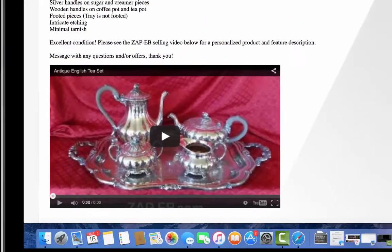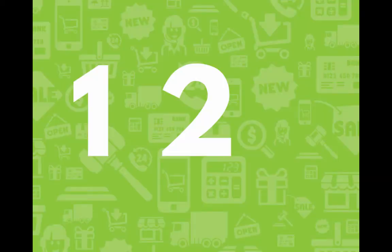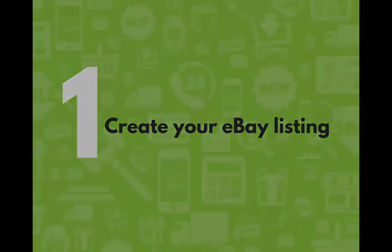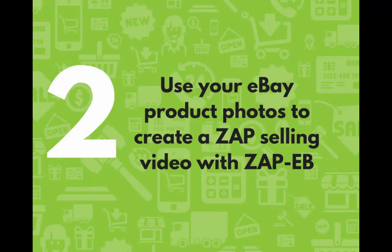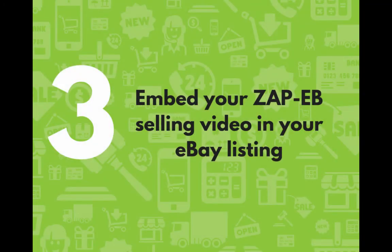Now that you see how simple it is to make a Zap video with Zap eB, getting the attention of your buyer on eBay is as simple as 1, 2, 3. Step 1: Create your standard eBay listing. Be sure to think ahead when snapping your photos — snap them in landscape orientation if possible, and take images that capture the best angles and details, knowing you'll be able to zoom in and point out details in your video. Step 2: Use your product photos to create a Zap video with Zap eB. You don't need to show all of them, but pick the ones that will really help you sell your product once you start interacting with them — the ones that give your potential buyer the best perspective. Step 3: Embed the selling video in your eBay listing. Remember to view the video on your listing to confirm that it plays back correctly and sounds good, just to be sure.